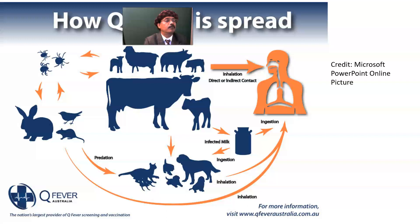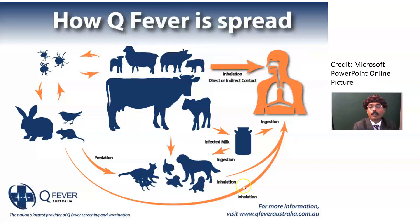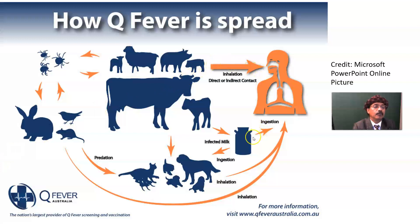This image is from an Australian website. It shows a person getting the infection through inhalation of aerosols and through ingestion of milk or dairy products. The reservoirs shown include kangaroos, dogs, and cats, in addition to cattle, sheep, goat, and pig as the main sources.